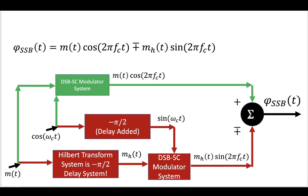You would then put them through a summer or a subtractor, depending on whether you're going for upper or lower sideband, and the output of this would be your single sideband message which has been modulated.